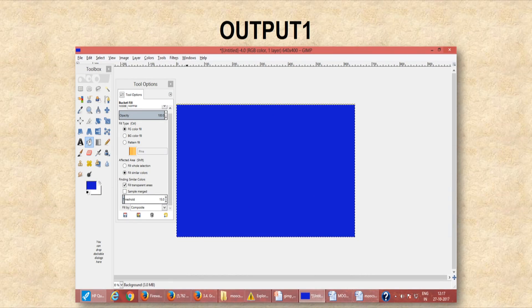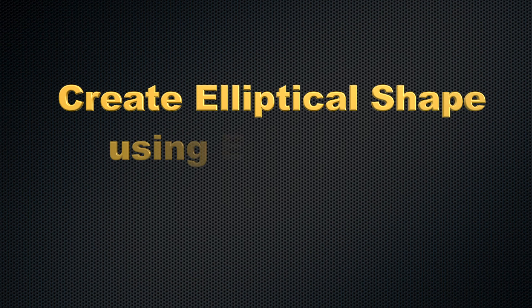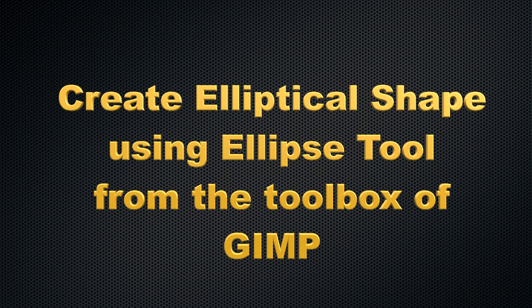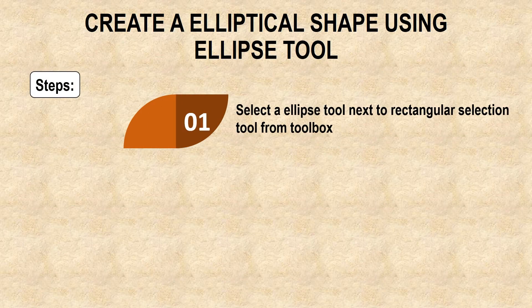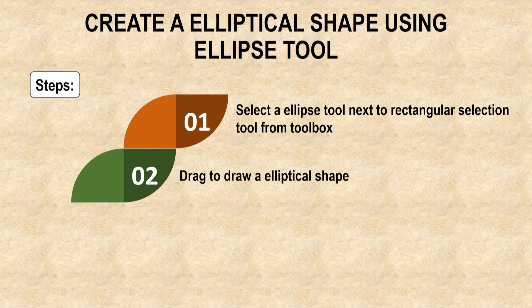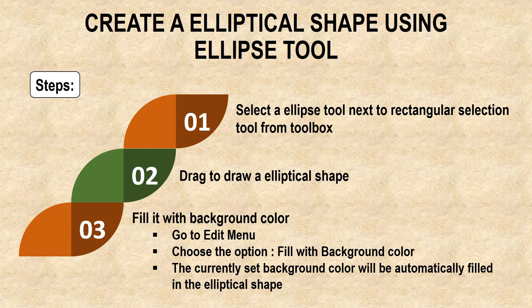In this diagram we can see that in the new file on GIMP's working environment, a blue color is being filled in the rectangular selection. Similarly, we can create an elliptical shape using the ellipse tool from the toolbox of GIMP. The steps are totally the same as for the rectangular select tool: select the tool from the toolbox, draw an elliptical selection on the working area, pick a color of your choice, and fill it using the bucket fill tool.